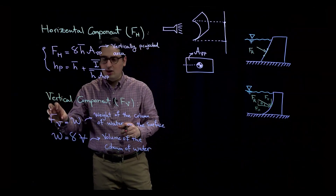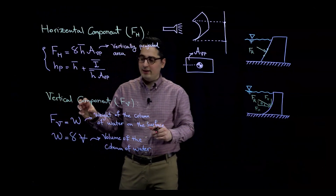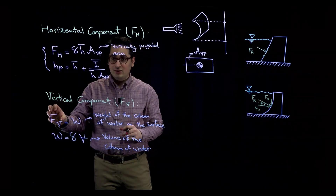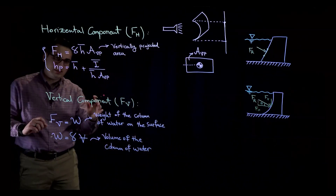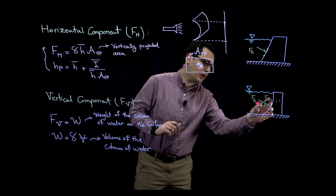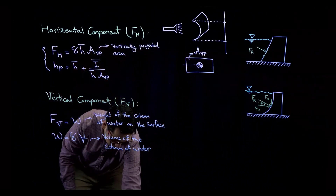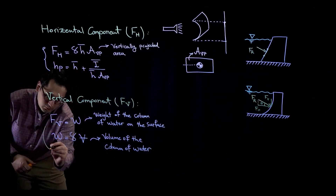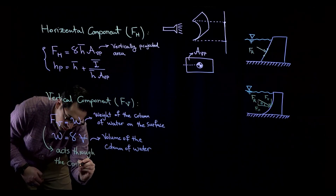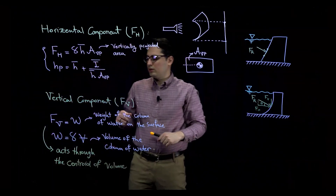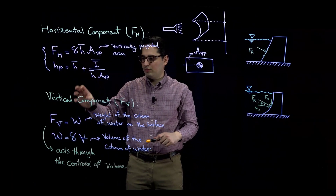This gives us the magnitude of the vertical force. F sub V acts through the centroid of the volume of water on top of the curved surface. These are the key things you need to know about horizontal and vertical forces.